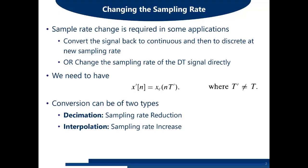Sampling rate change can be achieved in two ways. The first is to convert the signal back to continuous form and then perform sampling at a new sampling rate. The second option is to change the sampling rate of the discrete time signal directly. The first option is not desirable because it involves two stages: reconstruction and resampling. The second option is more practical as it changes the sampling rate directly.